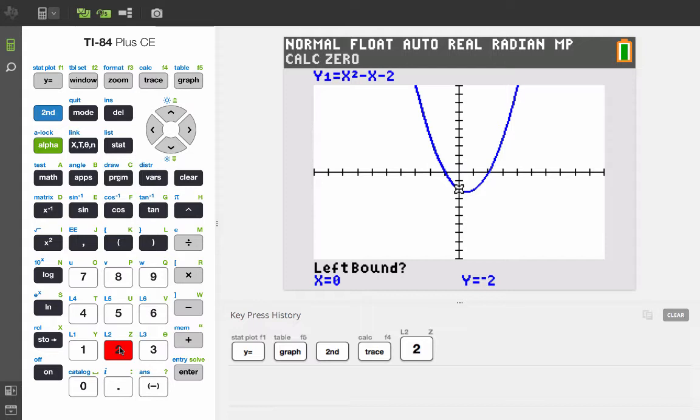So we're going to work with the zero on the left first. And for left bound, we're going to use the left arrow to move that little cursor somewhere to the left of where we think the zero is, then press enter.